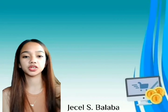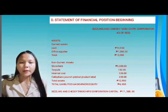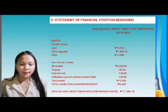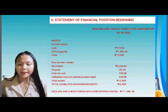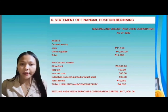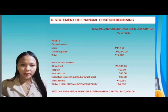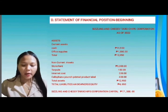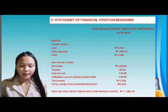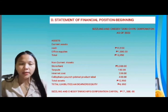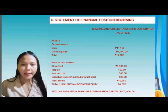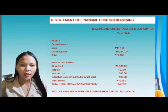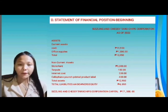Next is the statement of financial position. Our product is Sizzling Taro Chips Corporation as of 2022. For assets, we have current assets: cash of 11,950 and office supplies of 1,000 pesos, totaling 12,950. For non-current assets we have store rent of 3,000 pesos, tarpaulin of 150 pesos, internet cost of 500 pesos, and cellophane pouch with printed product label of 400 pesos, for a total of 12,950 in assets.